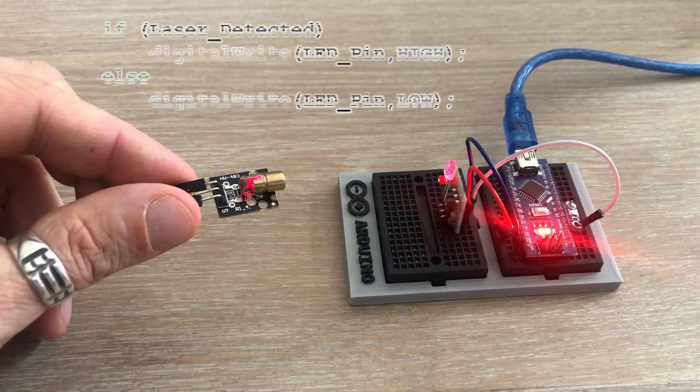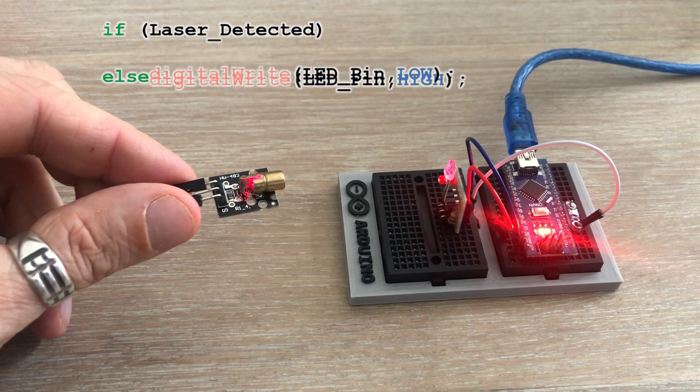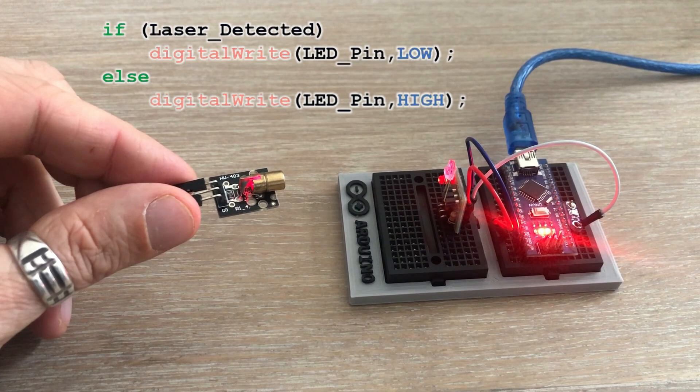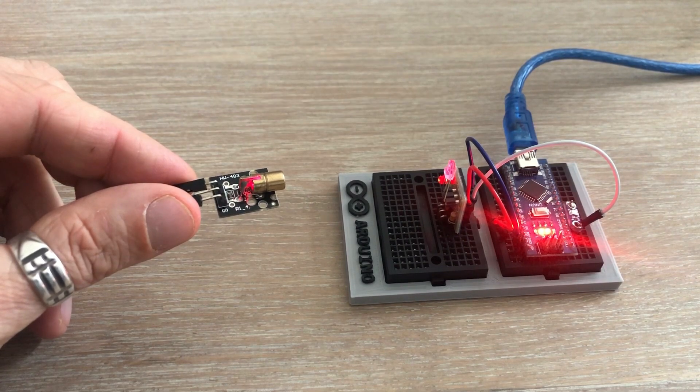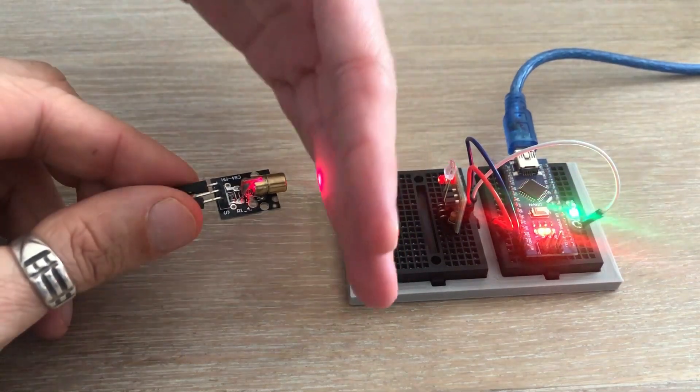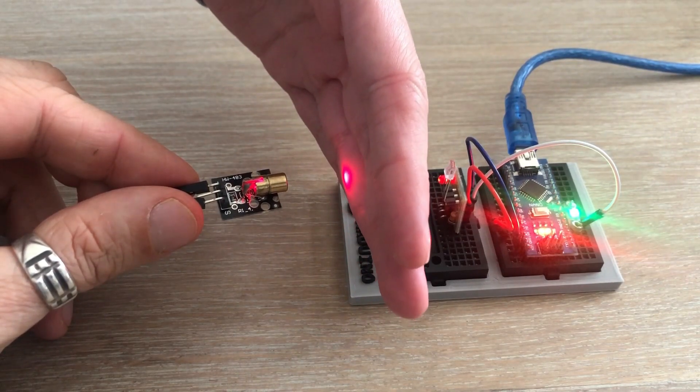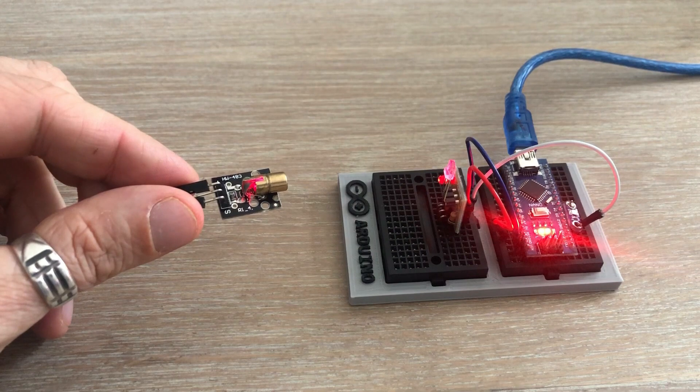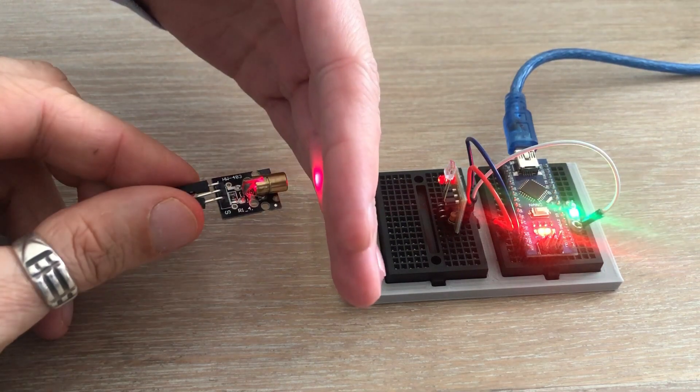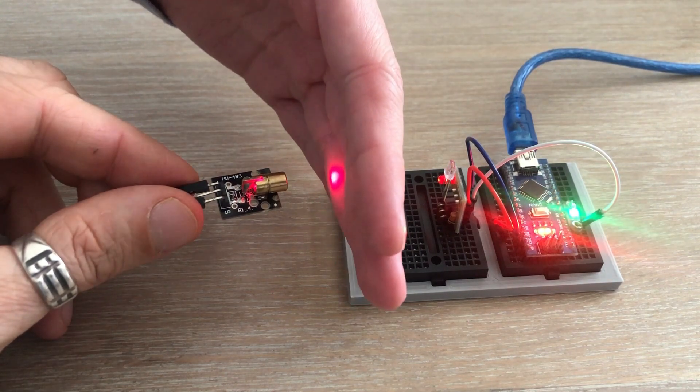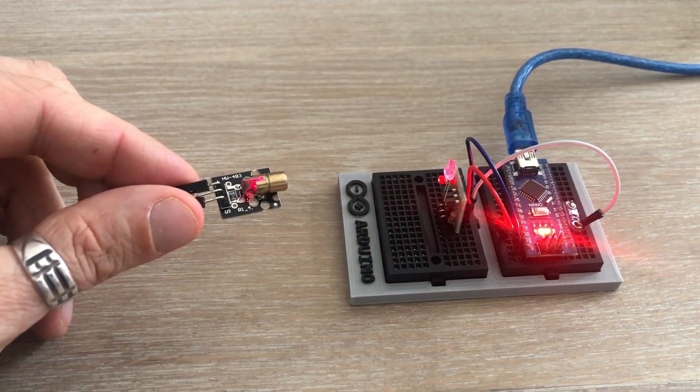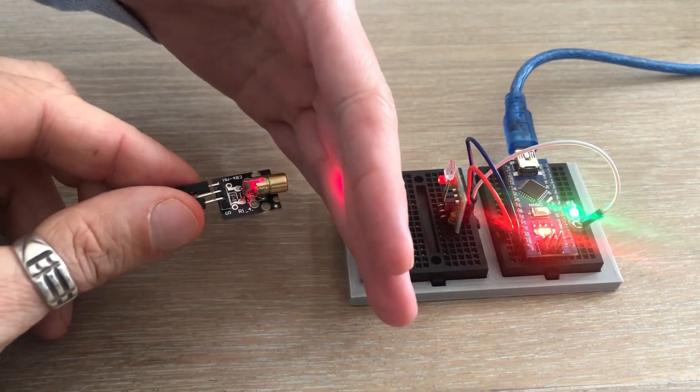If we swap signals inside the if statement, we in fact just created the simplest trip wire project. If the laser is pointed at the receiver and we break the laser line, we activate the alarm. In our case we turn on the LED, but we could easily replace it with the buzzer. So we have a simple project using these two laser modules out of the way.